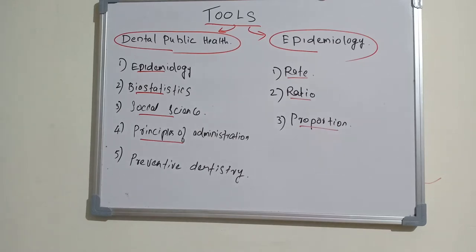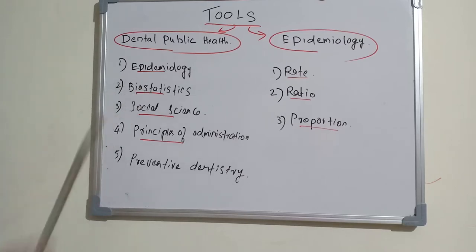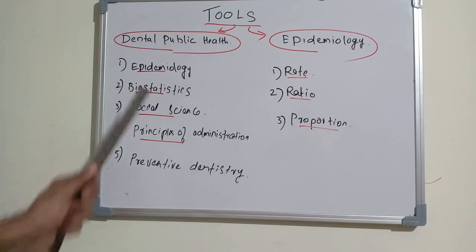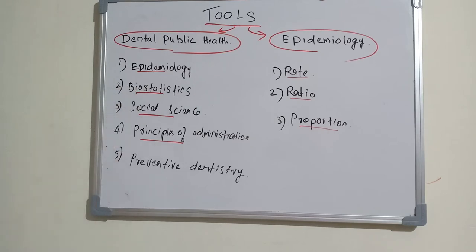The first tool of dental public health is epidemiology. As per definition, epidemiology is about identifying and solving diseases among people. The second tool of dental public health is biostatistics — it is very difficult to reach a conclusion from any epidemiological survey because we generate a lot of data.